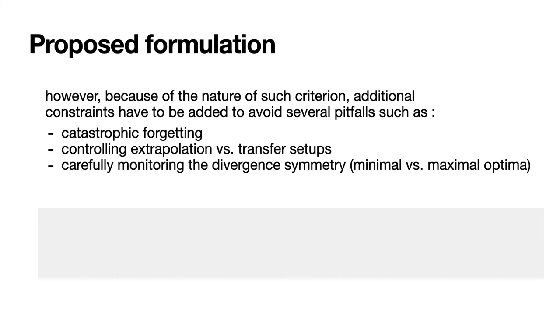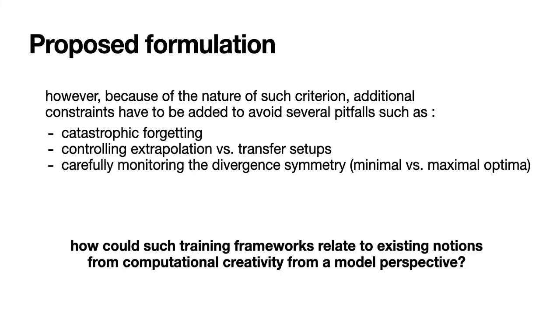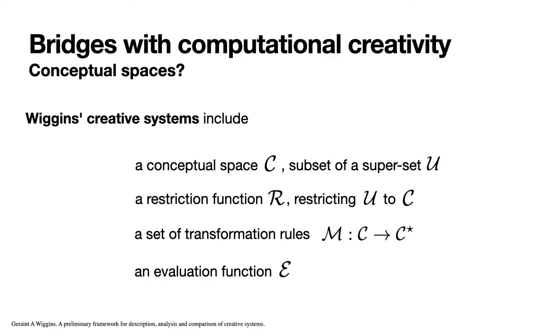Our last question remains, how could such training frameworks relate to existing notions from computational creativity from a model perspective? First, let's think about what could be conceptual spaces in machine learning generative models. Wiggins's creative systems include a conceptual space C subset of a superset U, a restriction function R, a set of transformation rules T, and an evaluation function E.